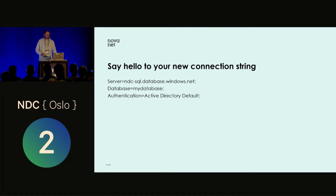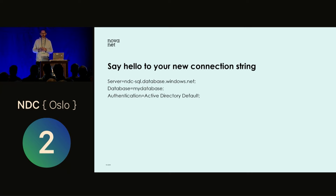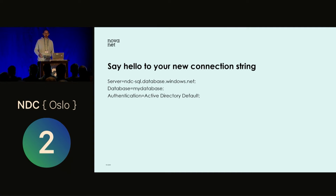It also added a new keyword to the connection string called `authentication`. This keyword can be either `Active Directory Managed Identity` or `Active Directory Default`, which also includes authenticating using Visual Studio, Visual Studio Code, Azure CLI, and similar tools — enabling local development with this approach. Here's your new connection string: just the server namespace, the database name, and the authentication method. No secrets. You can put this on your company website, check it into GitHub — whatever you like.